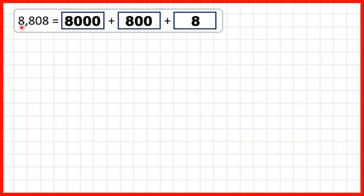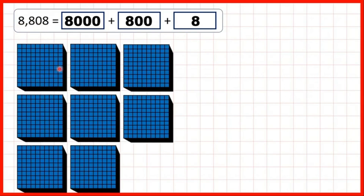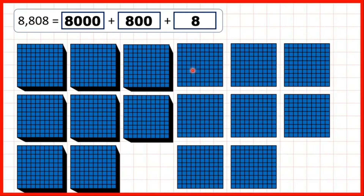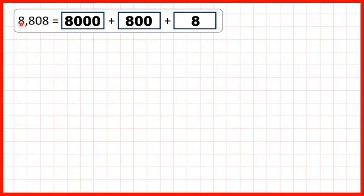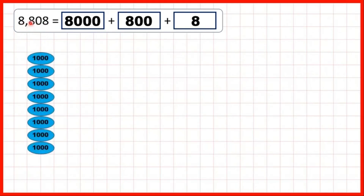Our last number was eight thousand, eight hundred and eight. For this eight in thousands, we can show eight thousand blocks. For this eight in hundreds, we can show eight hundred blocks. We don't show any tens, and then we just need to show eight ones — that's eight thousand, eight hundred and eight. Or, using place value counters, we can show eight thousands, eight hundreds, no tens, and eight ones.